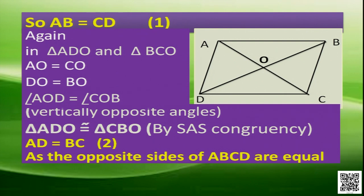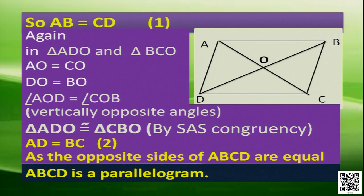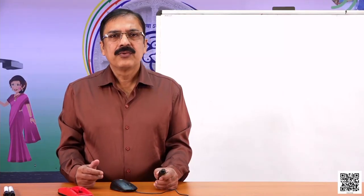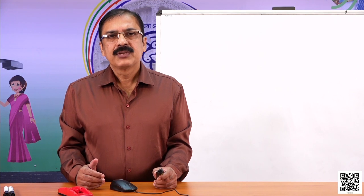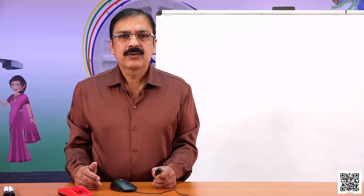From this, we can conclude that ABCD is a parallelogram. Today we discussed about the diagonal property of the parallelograms. Let us now have a look at some more properties of some special parallelograms.